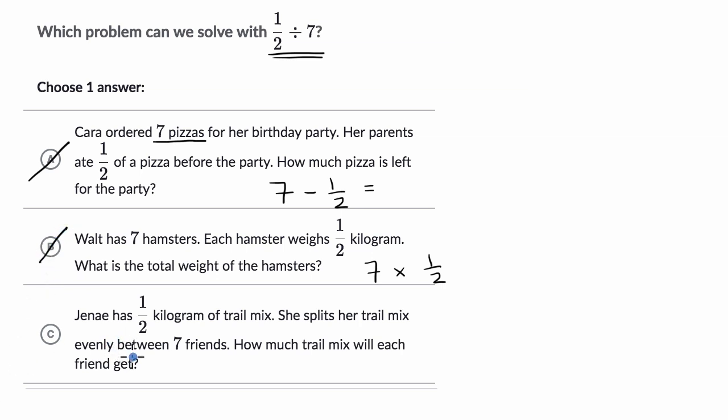So it's likely going to be C, but let's make sure it makes sense. Janae has one half kilogram of trail mix. She splits her trail mix evenly between seven friends. How much trail mix will each friend get?